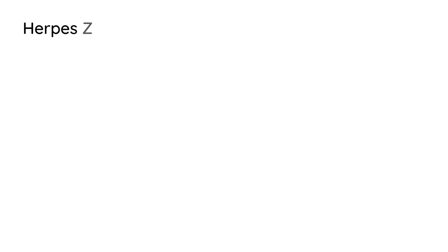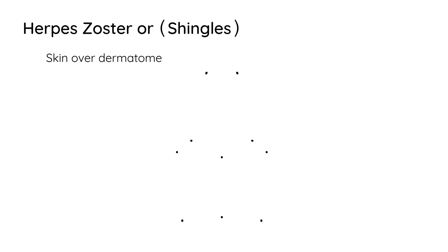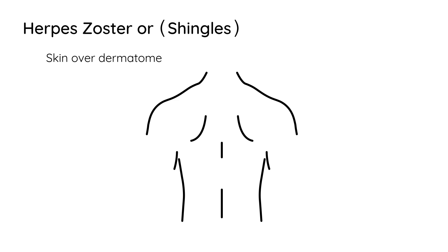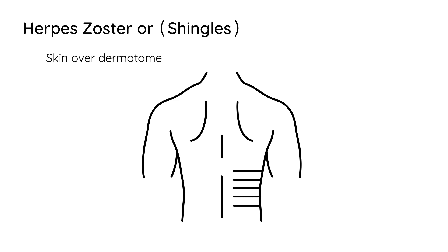Herpes zoster, or shingles, is essentially a rash, and the rash involves the skin over a dermatome. A dermatome is an area of the skin that represents a band or stripe across the body. So the rash, if it affects a dermatome, will be a band-like rash across the body, either the back or the chest.